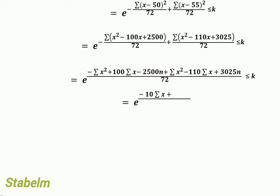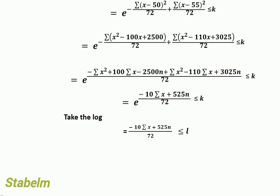To simplify further, we take the logarithm of both sides. The log neutralizes the exponential, so we have: (−10Σx + 525n) / 72 ≤ log k.